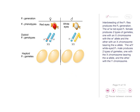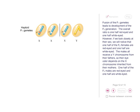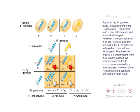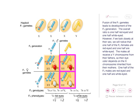Interbreeding of the F1 flies produces the F2 generation. The W+, W red-eyed F1 female produces two types of gametes: one with an X chromosome with the W+ allele, and the other with an X chromosome bearing the W allele. The W+, Y white-eyed F1 male produces two types of gametes: one with the X chromosome bearing the W allele, and the other with the Y chromosome. Fusion of the F1 gametes leads to development of the F2 generation. The overall ratio is one-half red-eyed and one-half white-eyed. However, if we look closely, we see that one-half of the F2 females are red-eyed and one-half are white-eyed. The males all receive a Y chromosome from their fathers, so their eye color depends on the X chromosome inherited from their mothers. One-half of the F2 males are red-eyed and one-half are white-eyed.